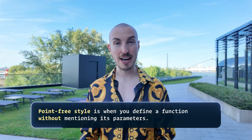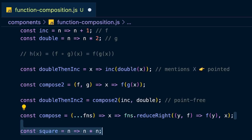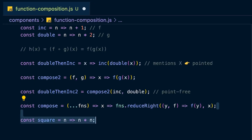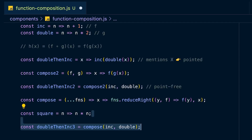Point-free style means you define a function without explicitly mentioning its arguments. If you want to compose more than just two functions — any arbitrary amount — you can generalize the composition. Define a function called compose that takes in an arbitrary amount of functions and spreads them into an array. Then you can reduce-right over the array to compose them in the reducer function. Define a function called square that takes a number and returns its square. Then you can compose double, then_inc, and square using the compose function. More sophisticated versions of the compose function are frequently exposed by libraries that also expose higher order components as part of their API, for example Redux or Apollo.